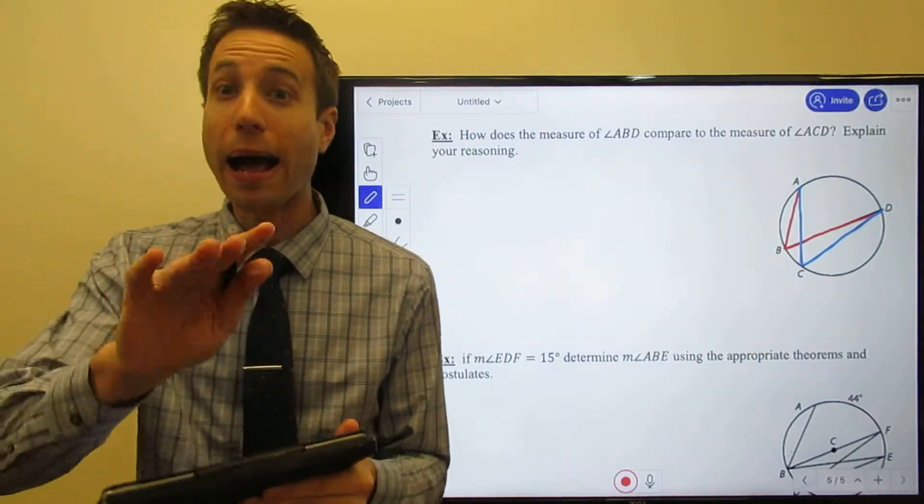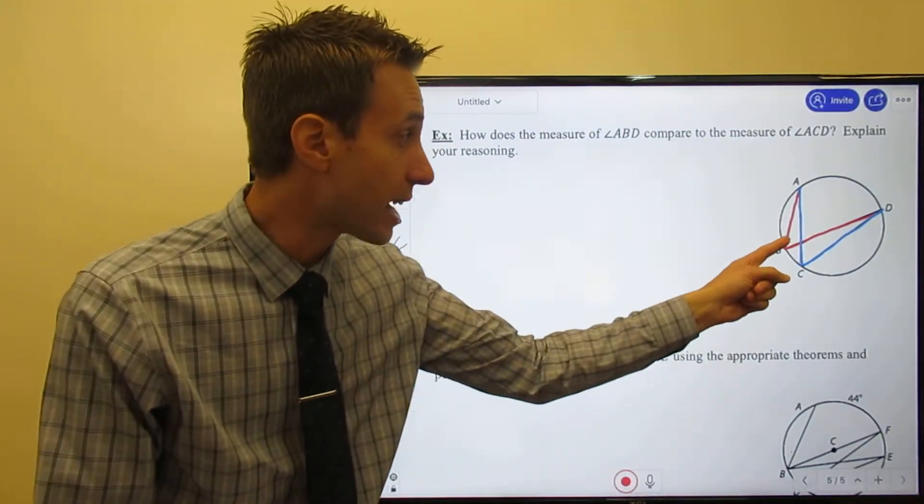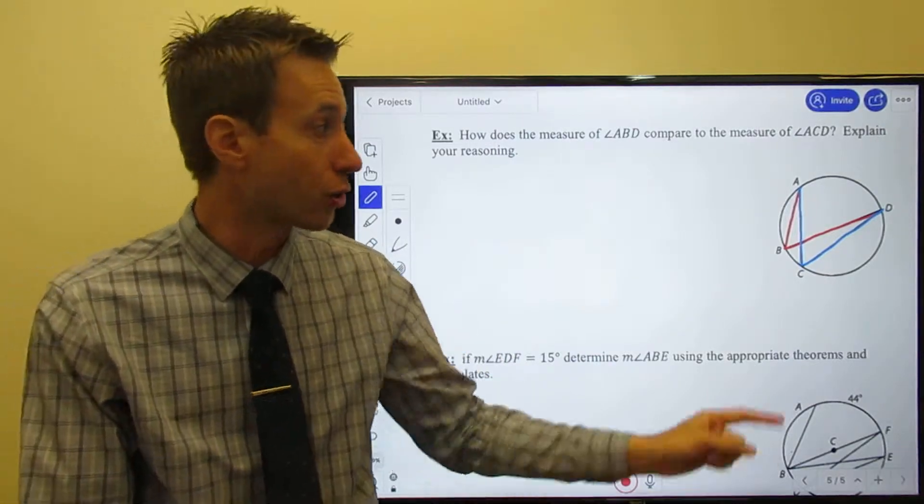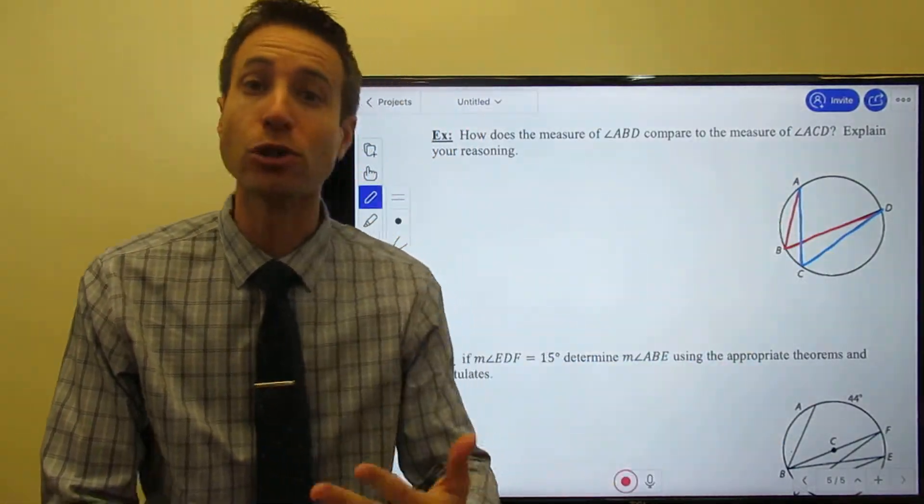Here we go. The inscribed angle theorem, right? Because both of these guys are inscribed angles. The vertex is on the circle and the sides of the angles are chords.